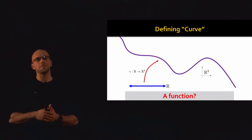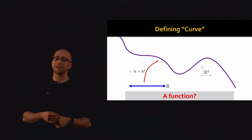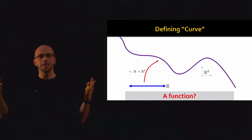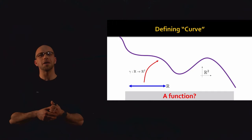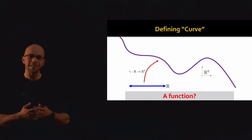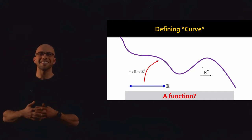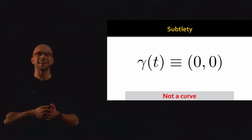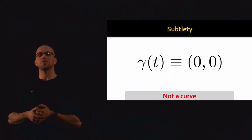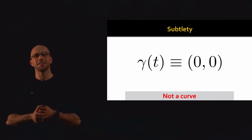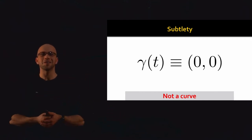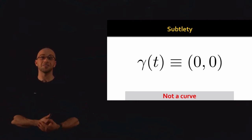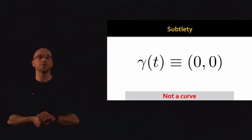That's a reasonable definition and indeed we'll get pretty close to working with it in this course. But if we want to be pedantic, this definition doesn't actually work all that well. To see that, here's the world's least interesting counterexample: gamma(t) is identically equal to (0, 0), the origin. Most of us would agree that what this car is tracing out is not a curve — it's just one point in the plane.